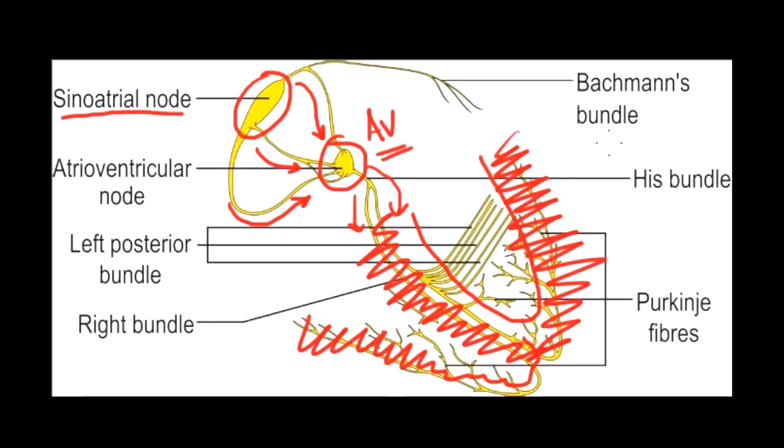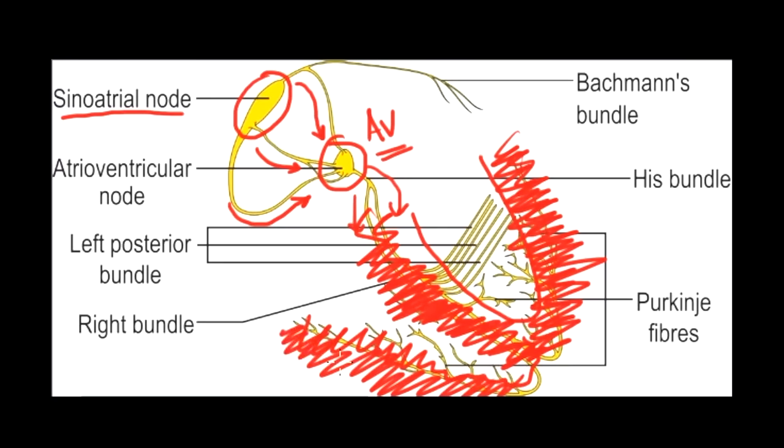Now on an EKG when we're actually looking at the electrical depolarization, are we actually seeing the electrical movement down this conduction system? The answer is no. This is such a small amount of electricity that it's almost imperceptible on an EKG. What is it that we're actually measuring? What we're measuring is the depolarization of the muscle. The depolarization of the muscle is very large in amplitude and that is what we are picking up on the EKG.